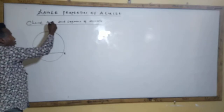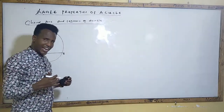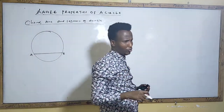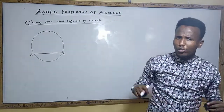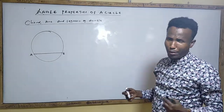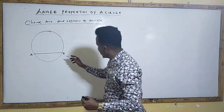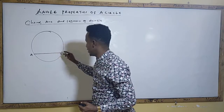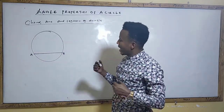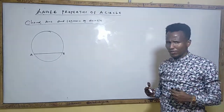After that, we have an arc. What's an arc? An arc is any part of the circumference of a circle. In primary school, remember, we used to draw an arc. So this is an arc, and this is another arc.